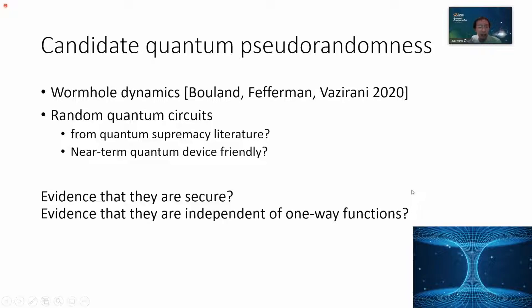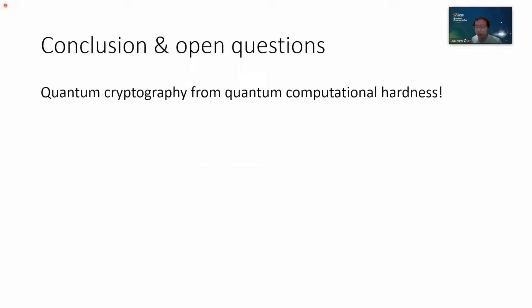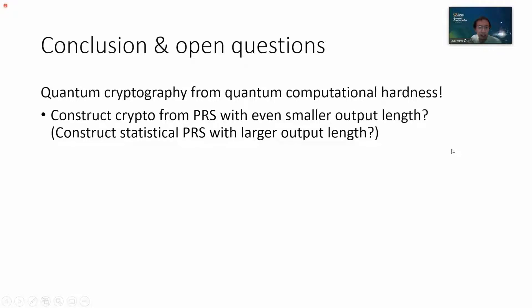Let me mention some open directions. Can we get evidence that these candidates are secure or insecure? Can we get formal evidence that these candidates are independent of one-way functions? Our work initiates this new direction of considering quantum cryptography and its relationship with quantum computational hardness — in our case, quantum pseudorandomness. For our parameters, there is still a small parameter range for output length where we don't know whether we can get efficient constructions, nor do we know whether it is useful for cryptography. One open question is: can we close this gap further?